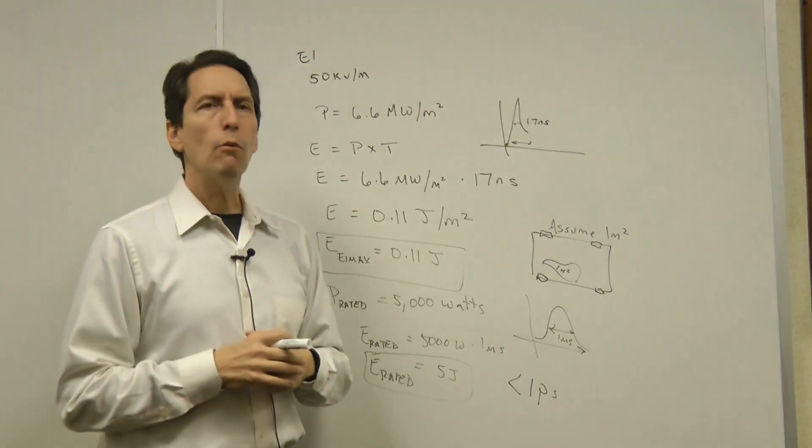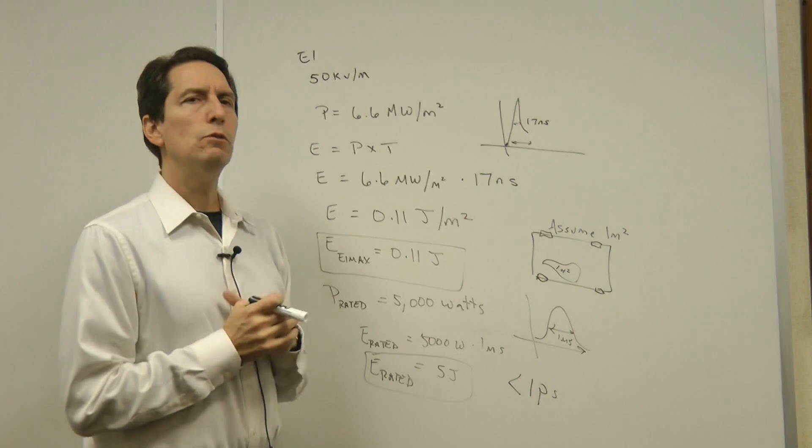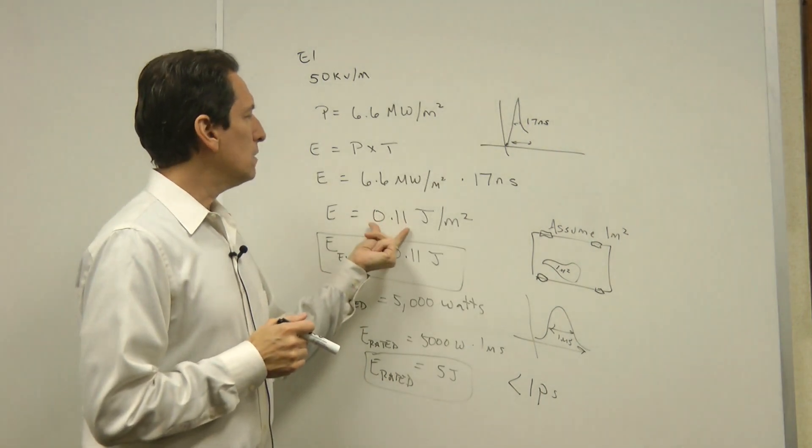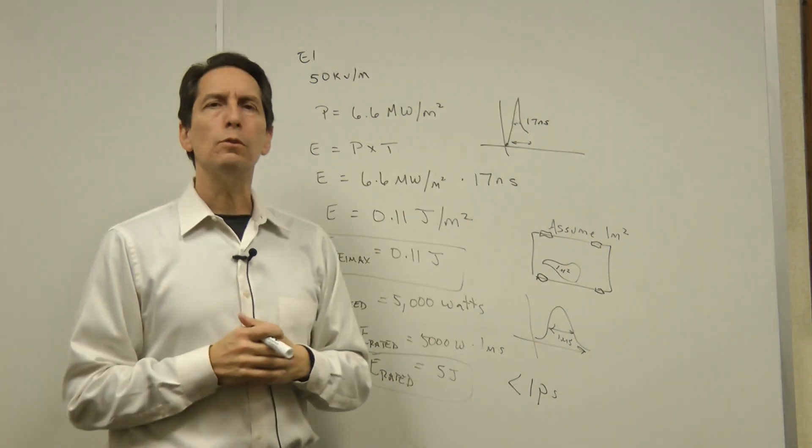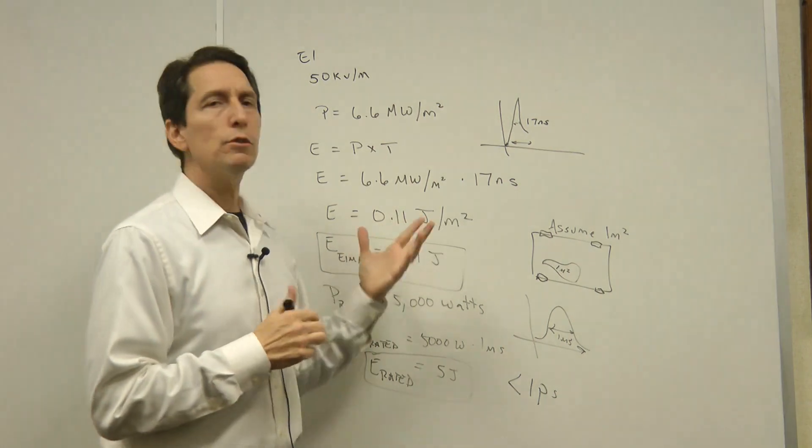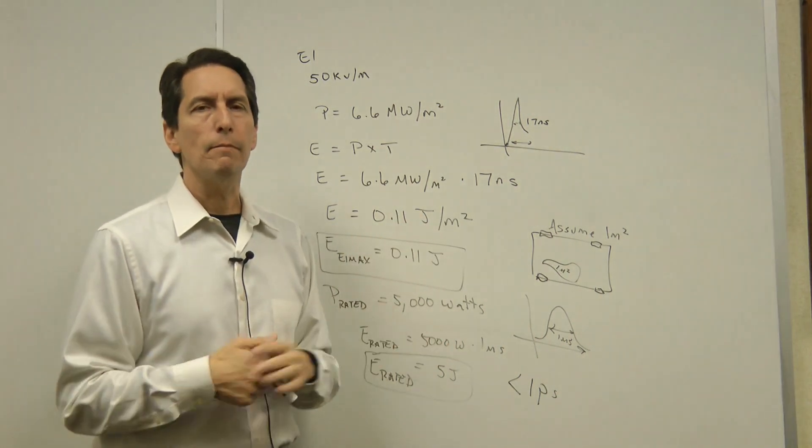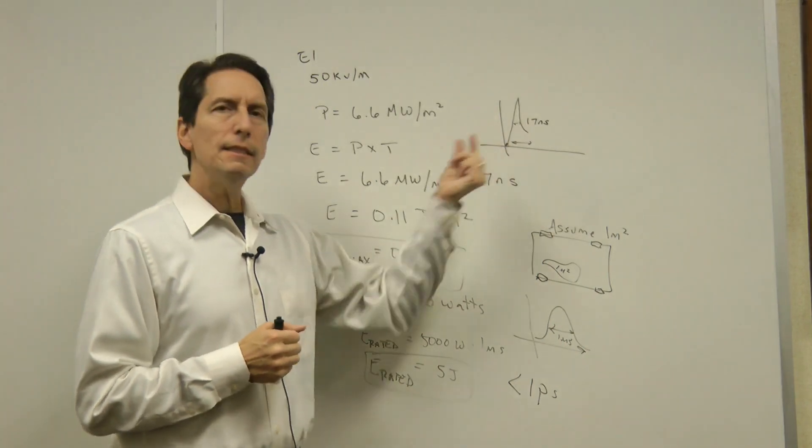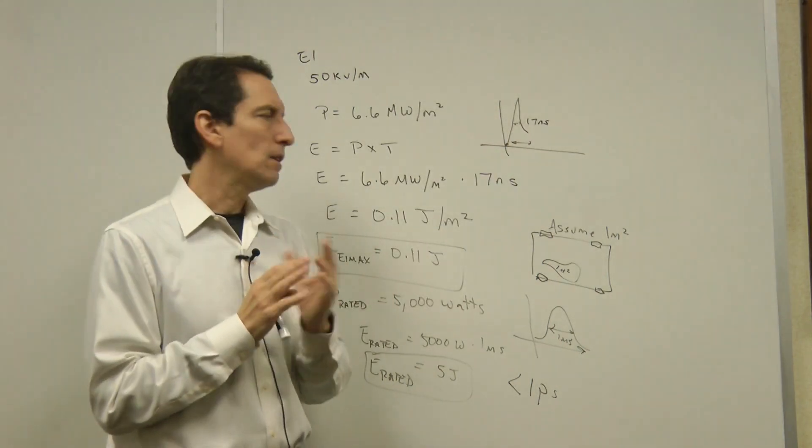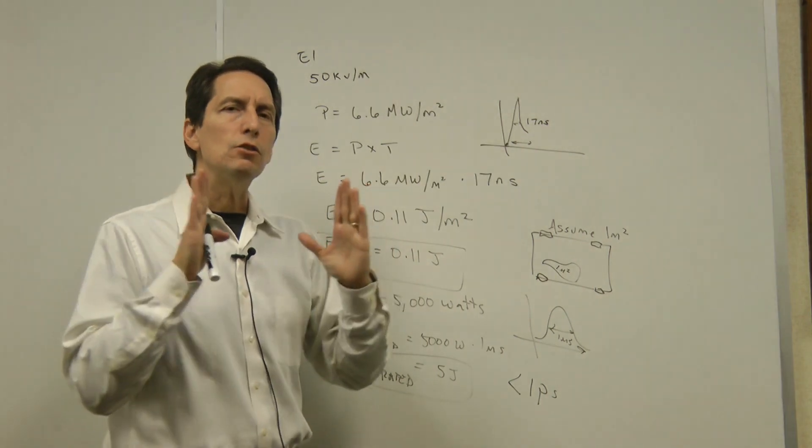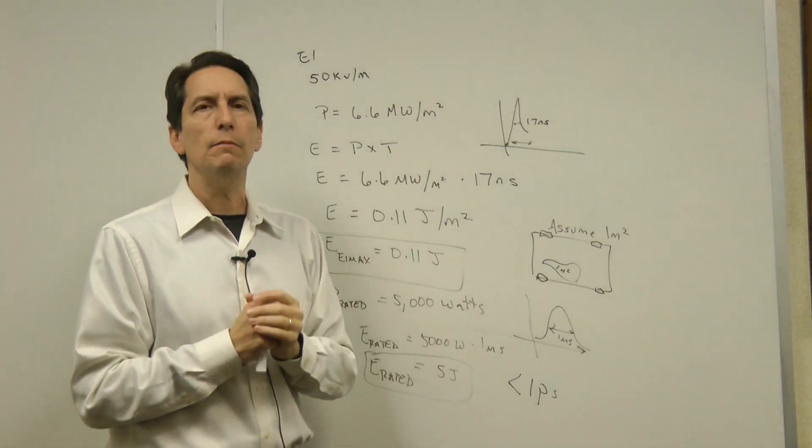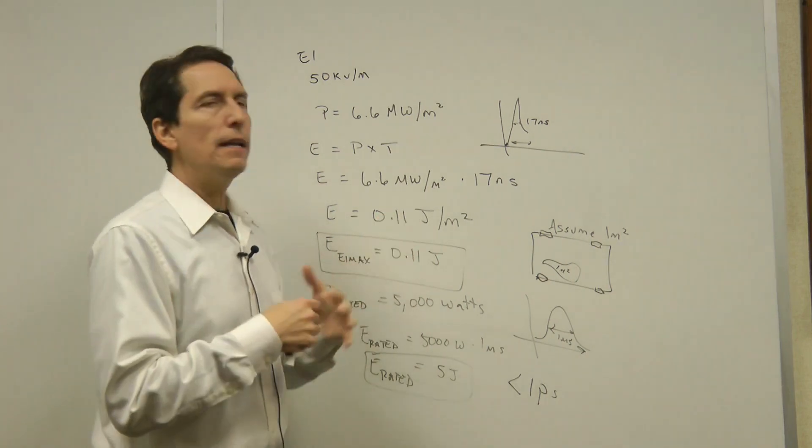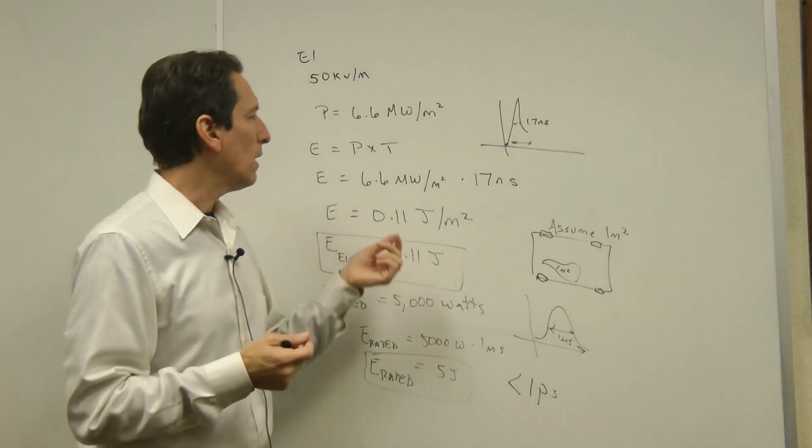The power is this 6.6 megawatts per square meter. Multiply those two guys together and you get that it's 0.11 joules per square meter. Now 0.11 joules per square meter doesn't sound like a lot, but again, the reason this is so damaging is that it's been compressed in time to only 17 nanoseconds.